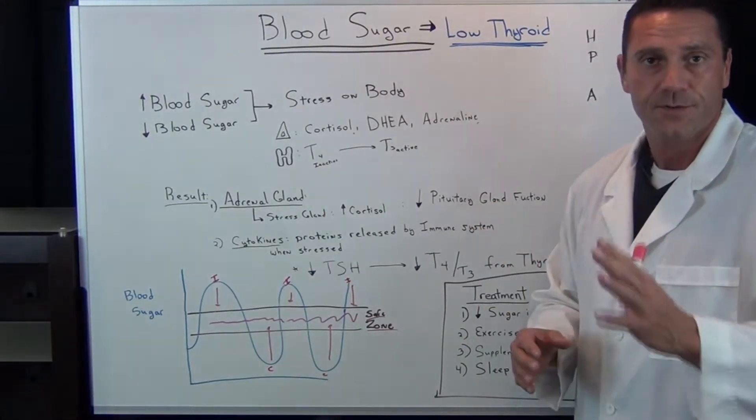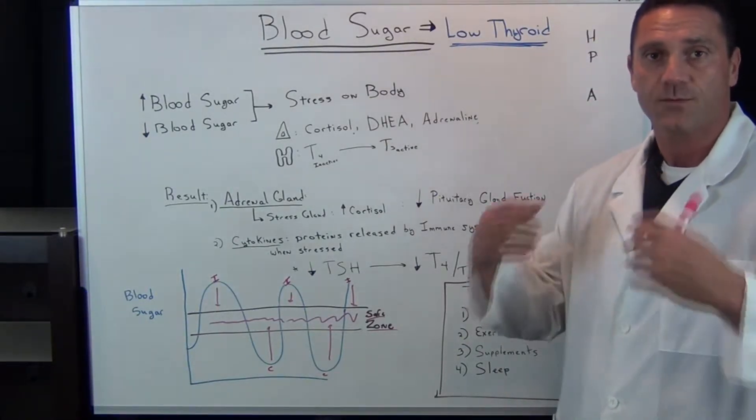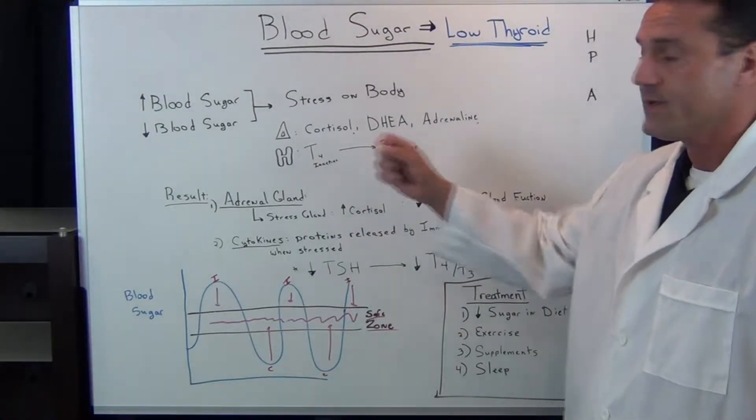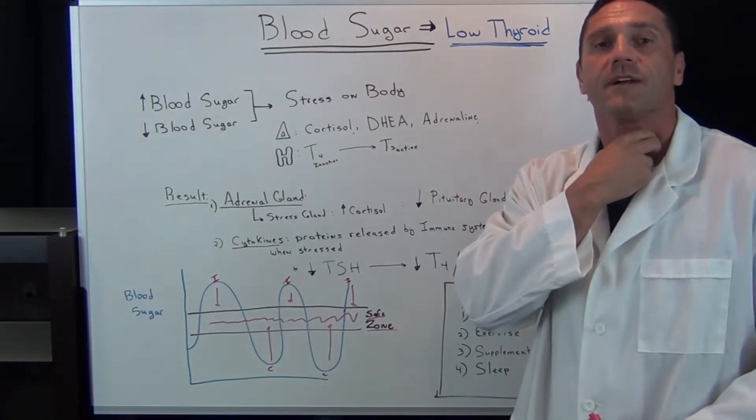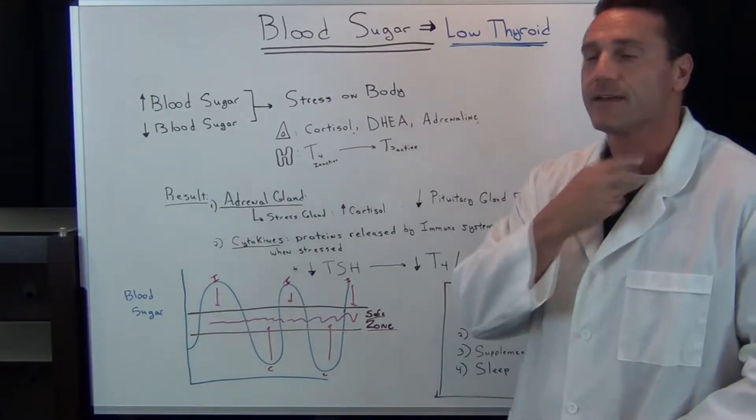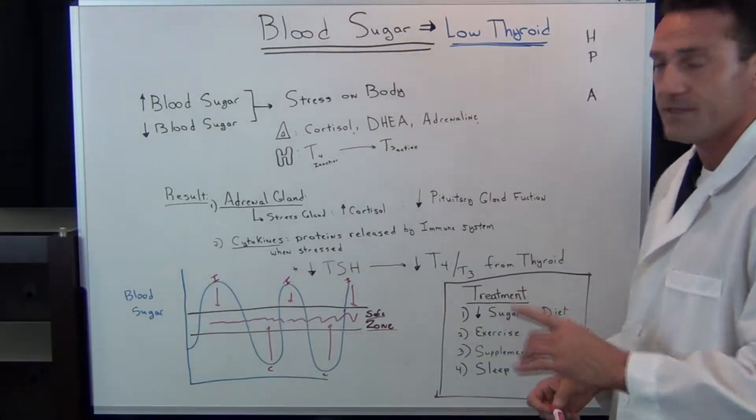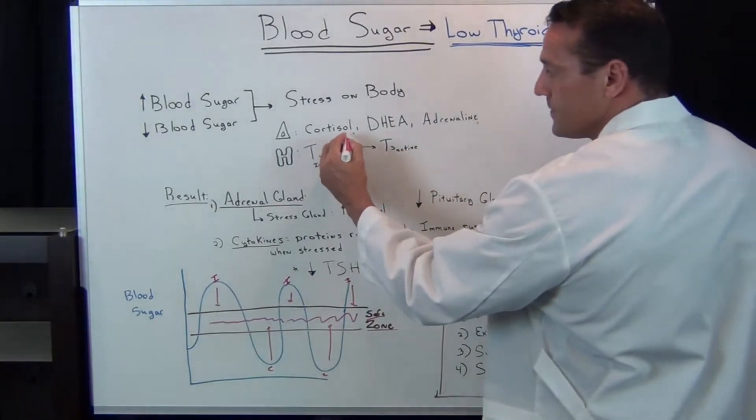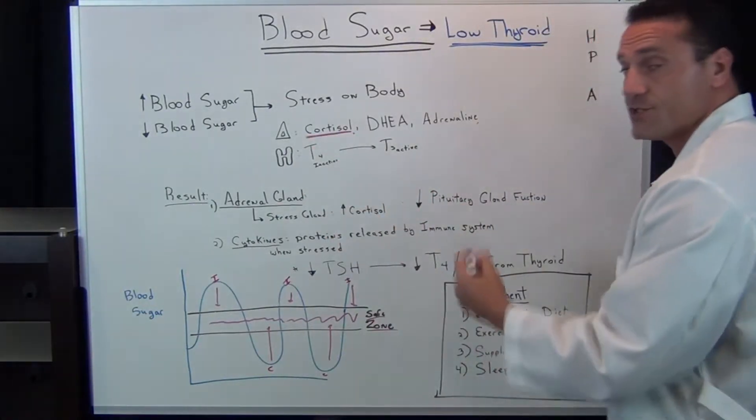We have two particular glands: the adrenal glands, which are small glands that sit on top of the kidneys, and the thyroid gland, which is a butterfly-shaped gland right in the middle of the neck. The function of the adrenal gland, our stress gland, is to release cortisol and adrenaline.